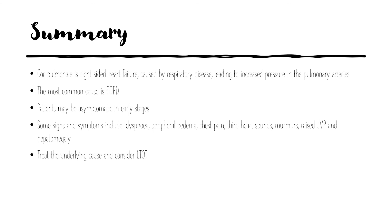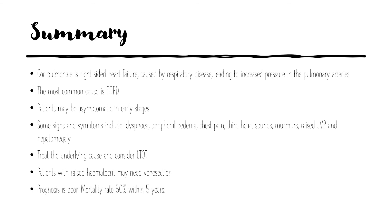In order to treat the disease, focus on the underlying cause and consider long-term oxygen therapy. Treat anything else you notice along the way, like respiratory failure — your usual A to E survey is critical here. Patients with raised haematocrit levels may need venesection. Prognosis is sadly poor in these patients, with a mortality rate of 50% within five years. Thank you for listening and happy studying.